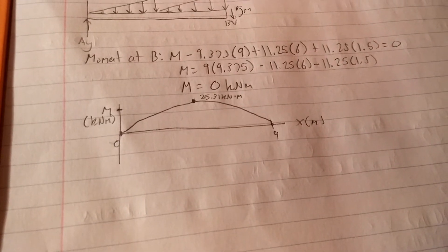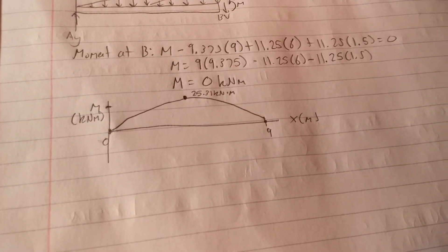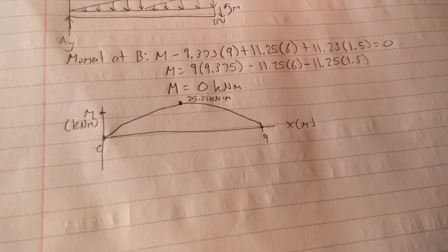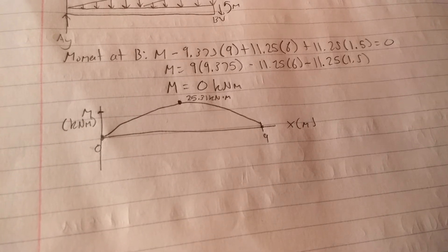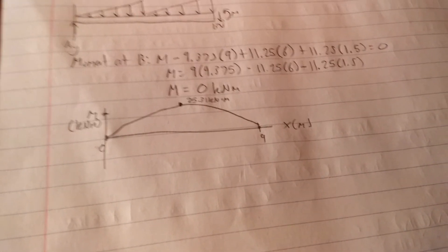So you get this parabolic shape for the moment equation. We have a zero, our other zero, and then we have the peak of 25.31 kilonewton meters. And that's it for this one.